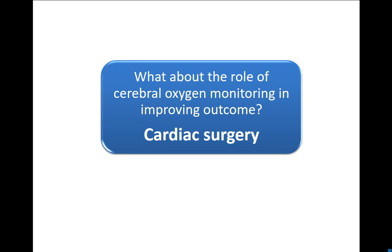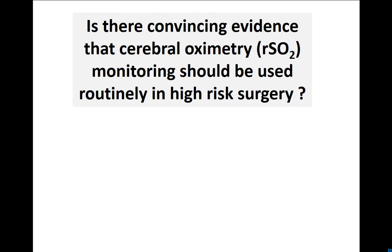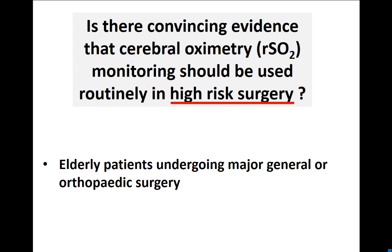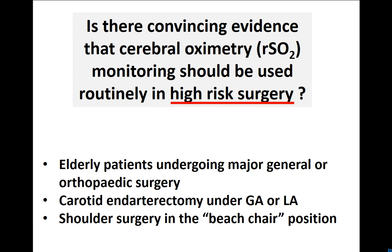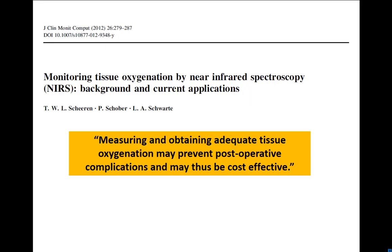What about cardiac surgery? Several studies are listed here, including Scott Goldman's — based on historical controls — and two randomised studies by John Merkin and James Slater showing some benefit. Convincing evidence is still lacking for high-risk surgery, particularly cardiac surgery. But cerebral oximetry should be considered for elderly patients undergoing major general or orthopaedic surgery, carotid endarterectomy under GA or local anaesthesia, shoulder surgery in the beach chair position, and major cardiac and thoracic surgery. Tom Sheeran in Groningen suggested that if you maintained adequate tissue oxygenation, it may prevent post-operative complications and be cost-effective.